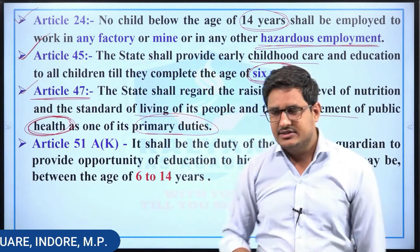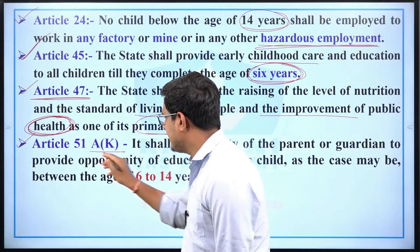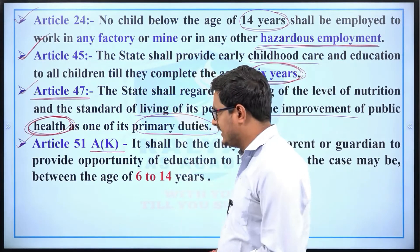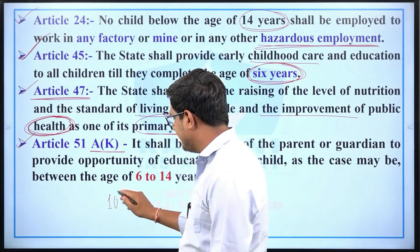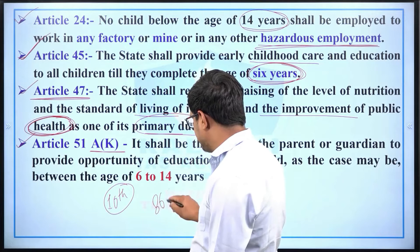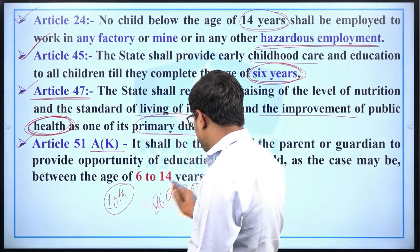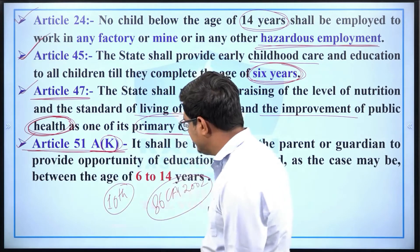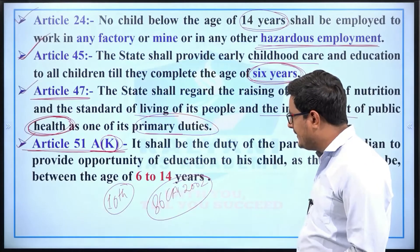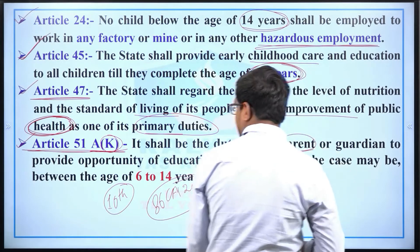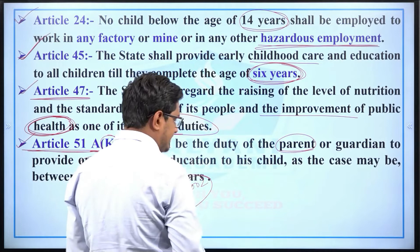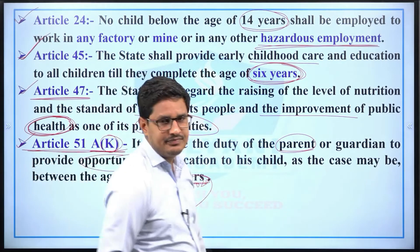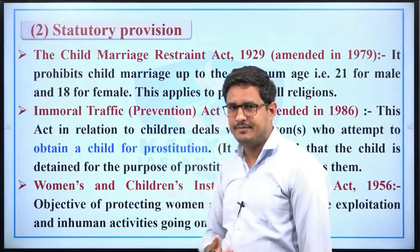Article 47 is a Directive Principle of State Policy, meaning the state should work for the health improvement of all its people. The next constitutional provision is Article 51A, which requires parents and guardians to provide opportunities for education to children within the age of 6 to 14 years.